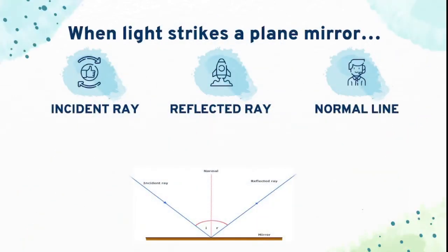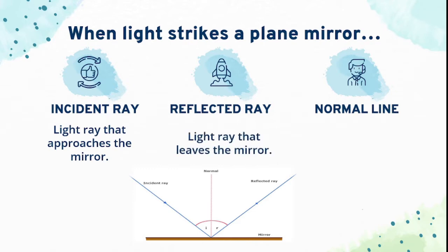When light strikes a plane mirror, we consider incident ray, reflected ray, and the normal line. The incident ray is the light ray that approaches the mirror. Reflected ray is a light ray that leaves the mirror, while the normal line is the imaginary line perpendicular to the surface of the mirror.